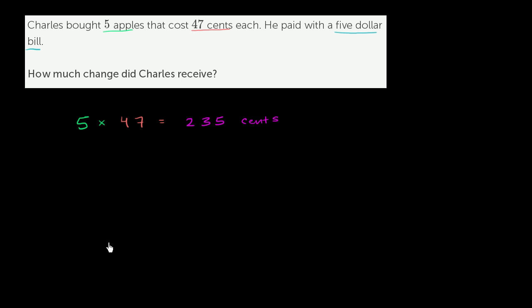Now, how much did he pay? He paid with a $5 bill. Well, a $5 bill is going to be how many cents? Well, let's think about it. A $5 bill times 100 cents per dollar. He's essentially paying with 500 cents. So this right over here is the cost, and then this is what he paid.